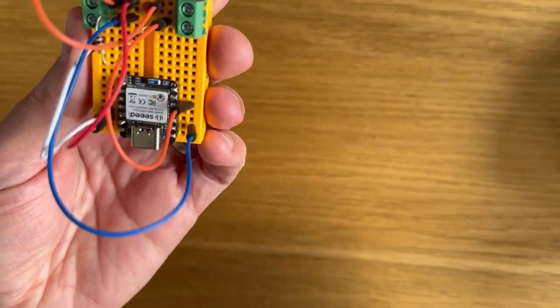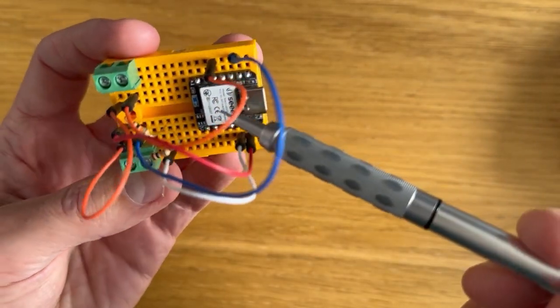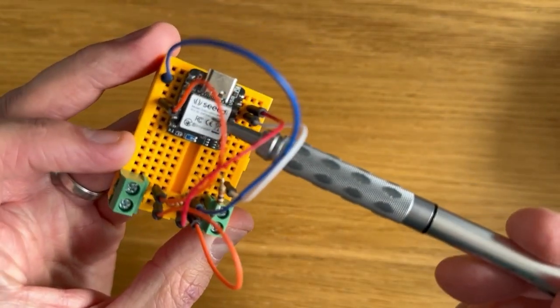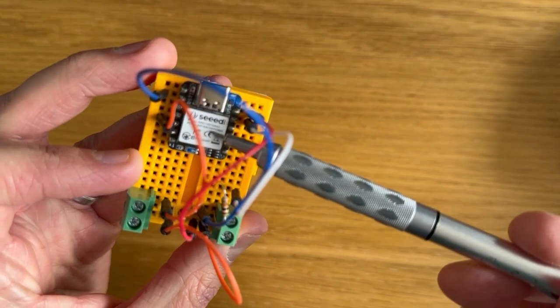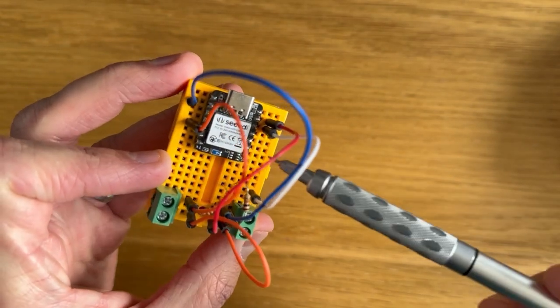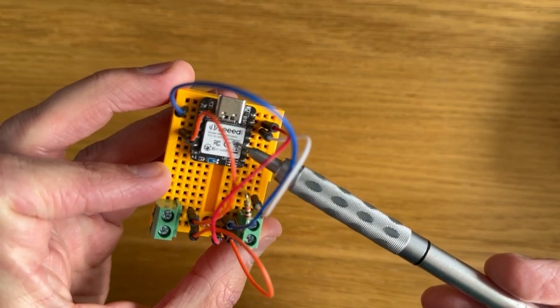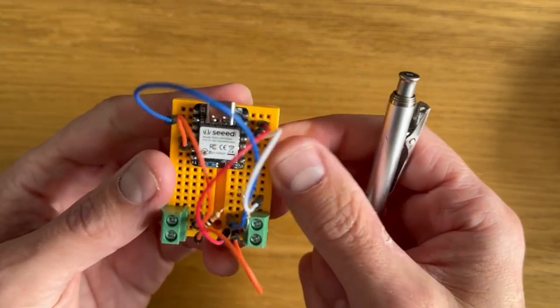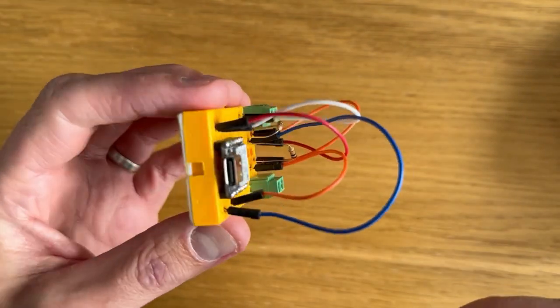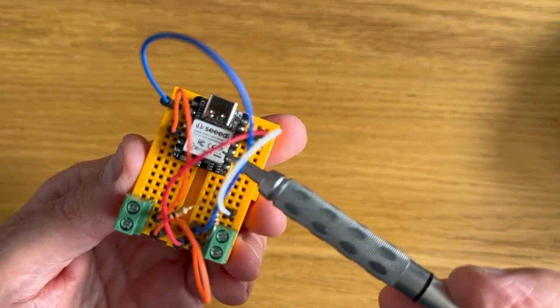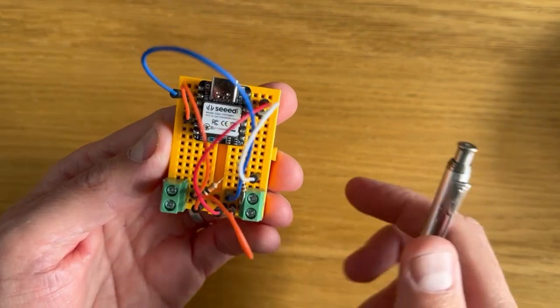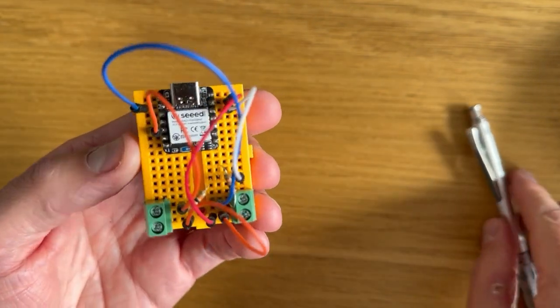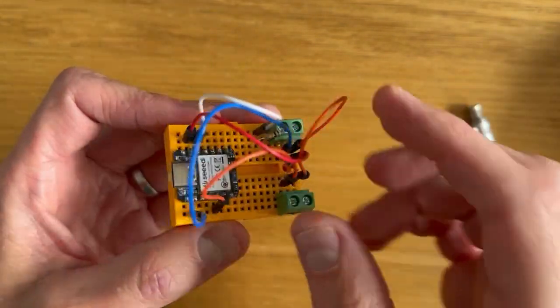So back to the prototype I'm using a Nordic board on here this is an NRF A240 and this is a SEED. I think it's XIAO is the model. So I've opted for these because they provide really good analog to digital conversion which makes my life easier.